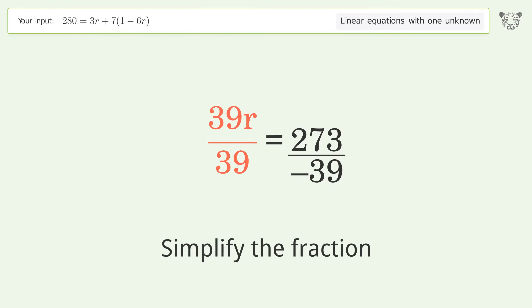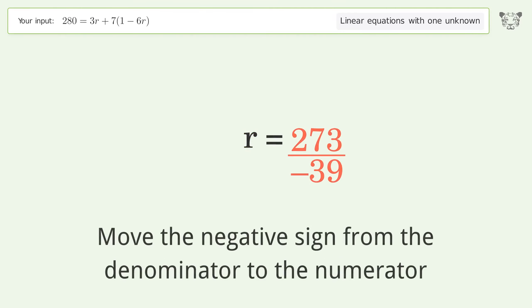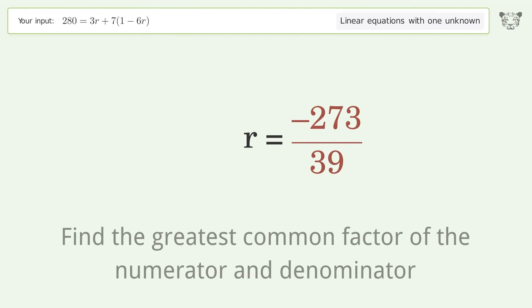Simplify the fraction. Move the negative sign from the denominator to the numerator. Find the greatest common factor of the numerator and denominator.